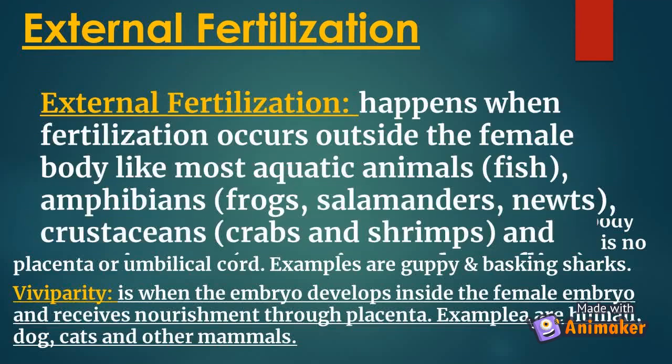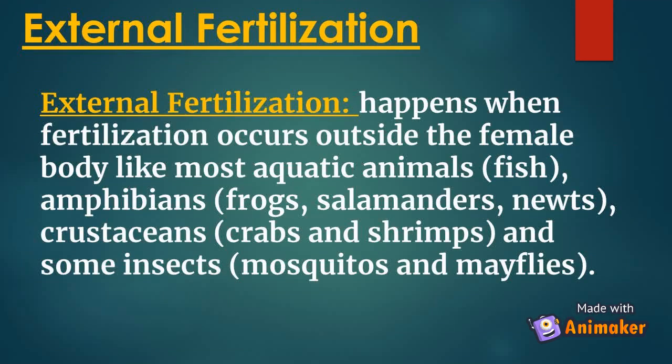The second type of fertilization is external fertilization. External fertilization happens when fertilization occurs outside the female body, like in most aquatic animals such as fish, amphibians like frogs, salamanders, newts, crustaceans like crabs and shrimps, and some insects like mosquitoes and mayflies.